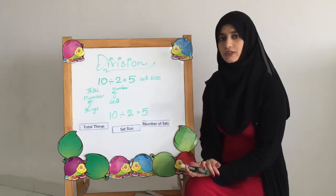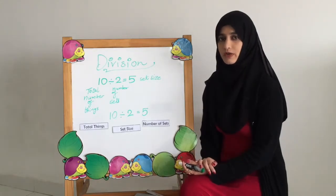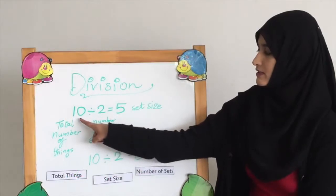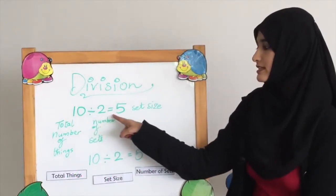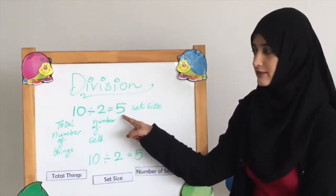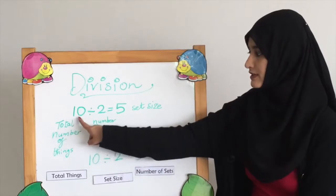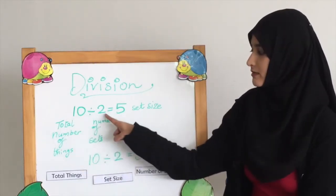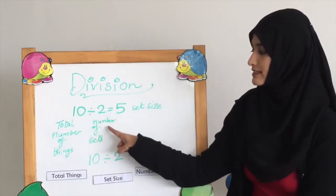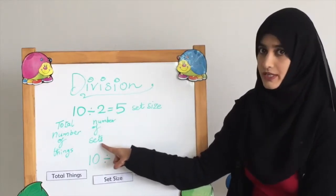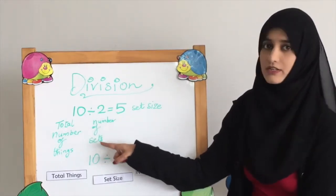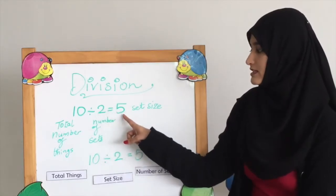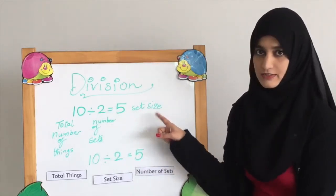In this video, you are going to learn a new way of dividing numbers. In the first method, if you look at the question 10 divided by 2 equals 5, the first number is the total number of things we have. The second number tells us the number of sets we need to make, and then we start distribution. The answer is the set size.